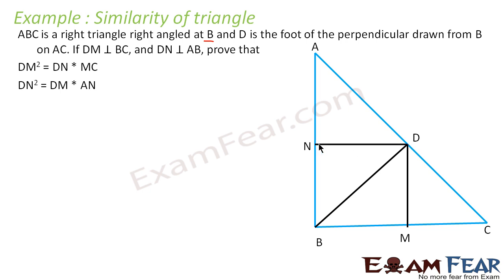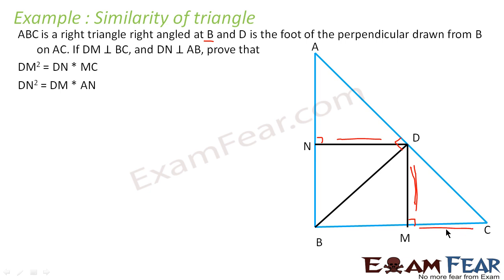Perpendicular to BC meets at M, and DN is perpendicular to AB, so let's draw this line — this point is N. So the construction is clear. We have to prove that DM square is equal to DN into MC. Let's see the sides involved: DM appears twice, and we also have DN and MC.